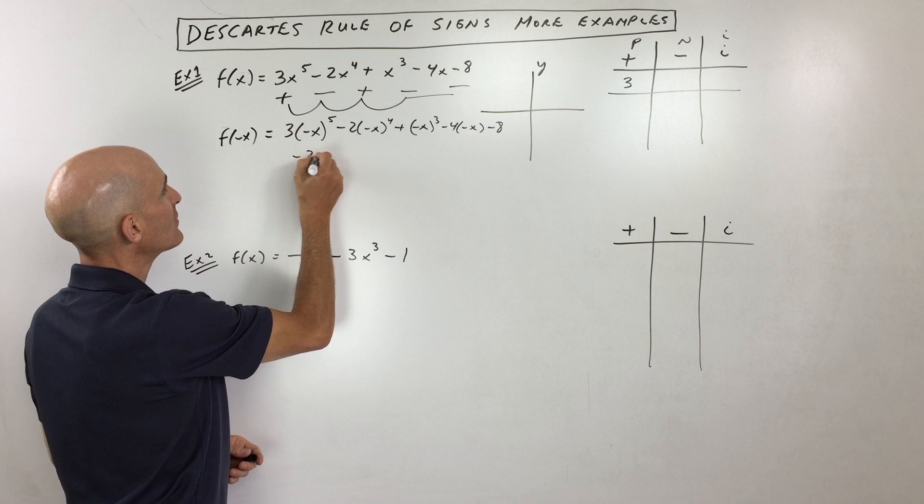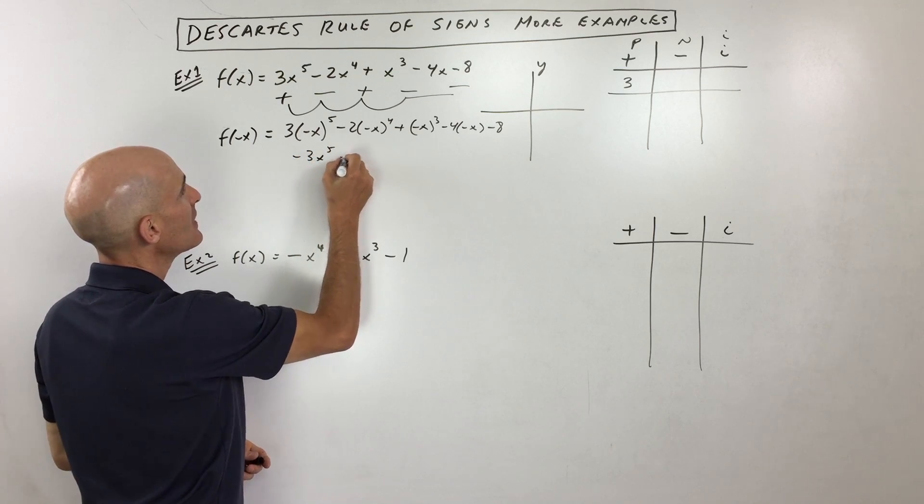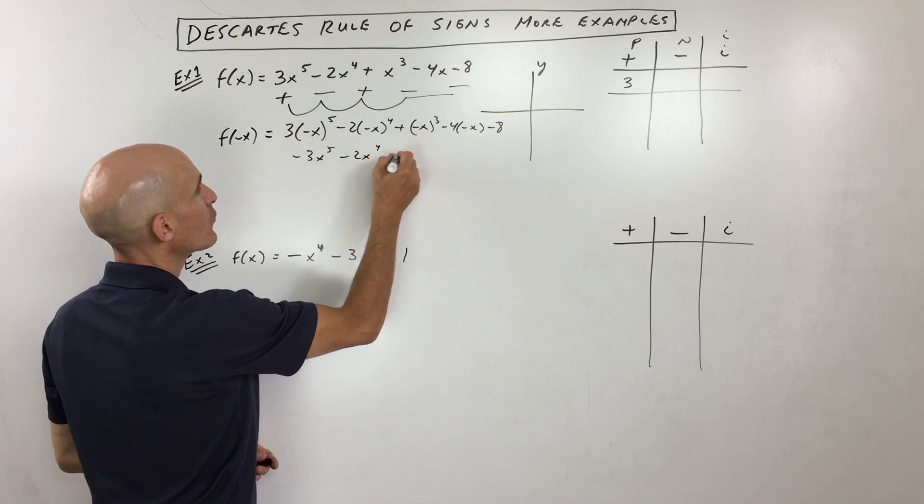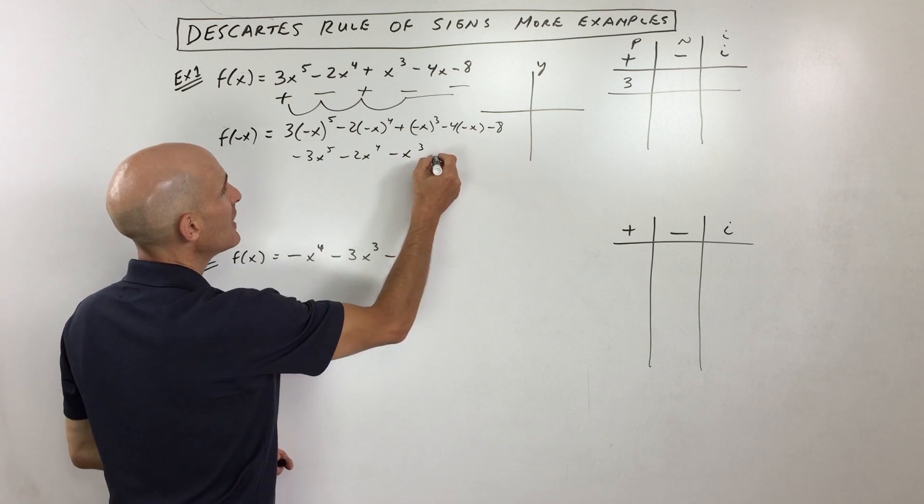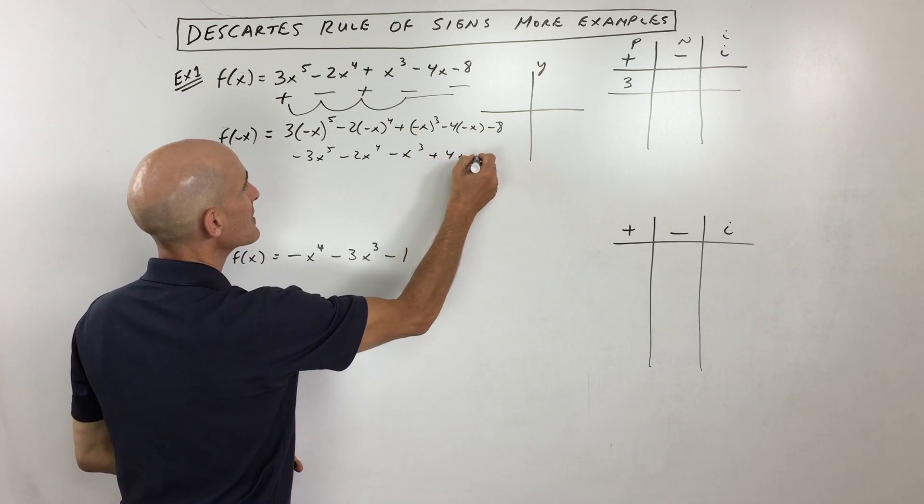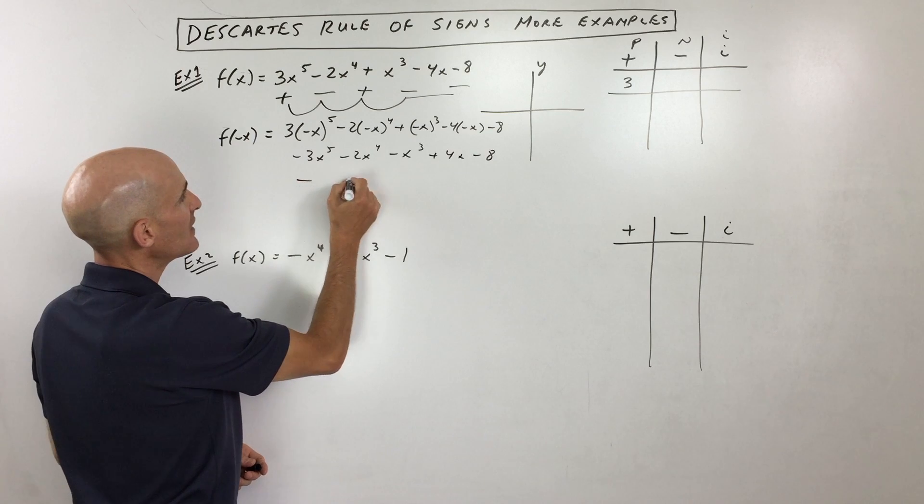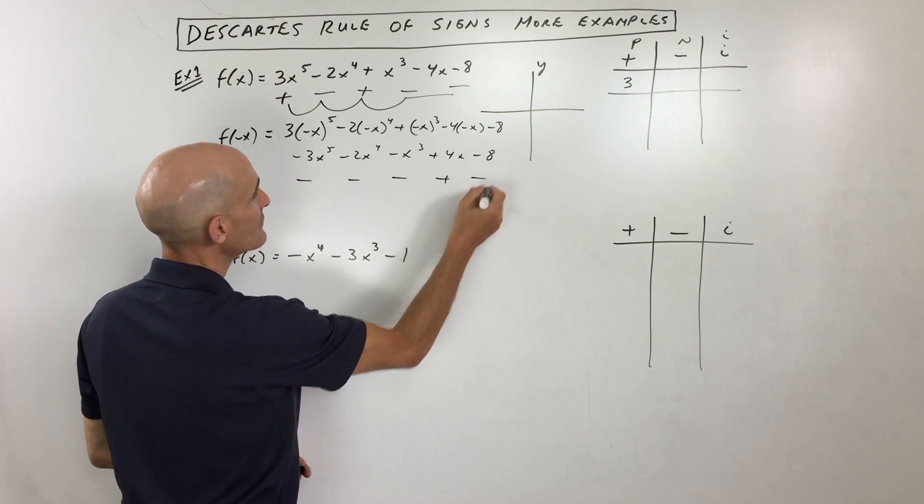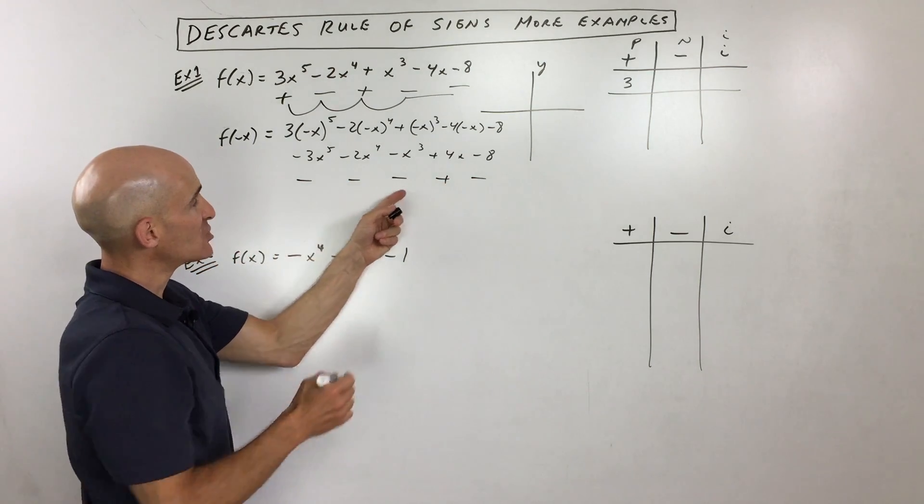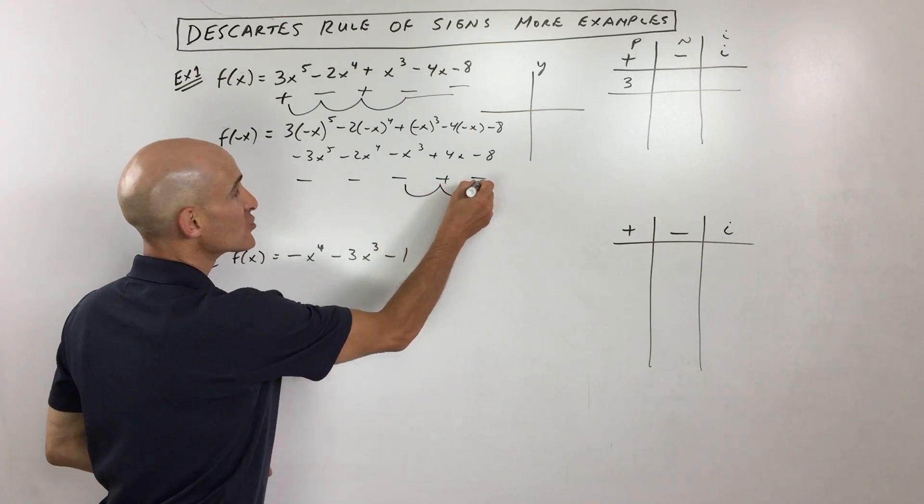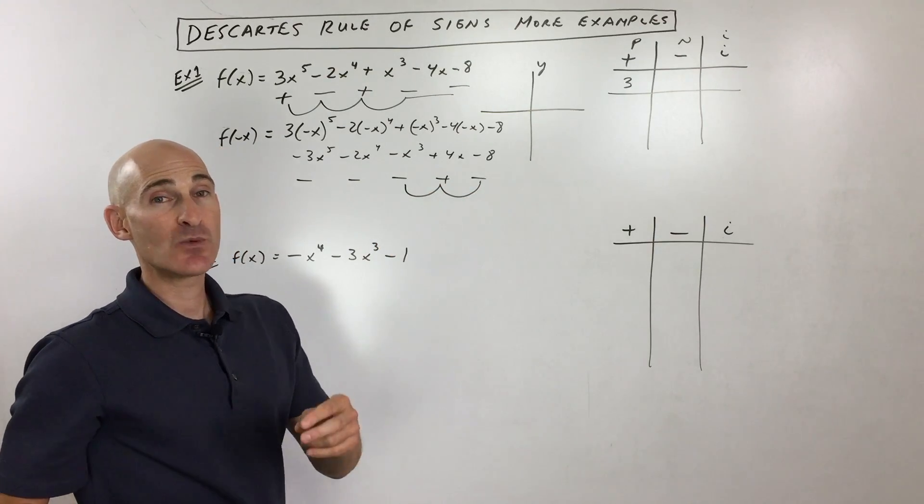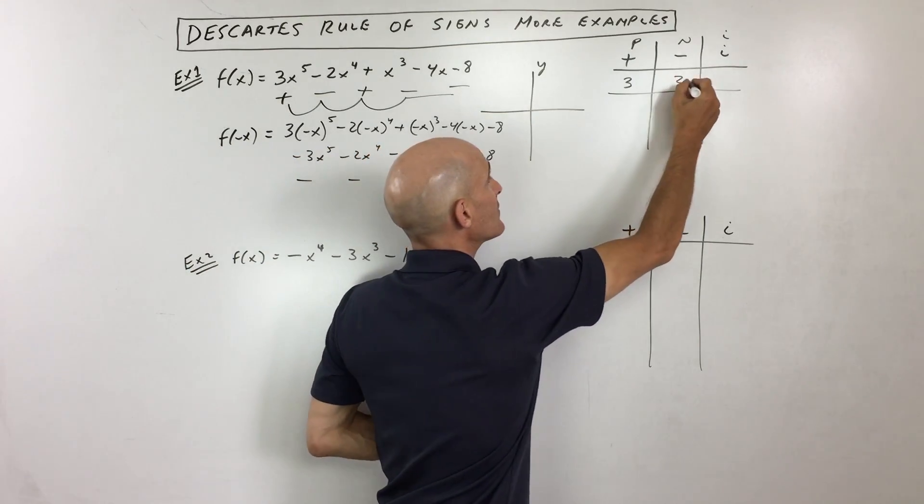If we go back and simplify, we get negative 3x to the fifth, negative 2x to the fourth, negative x cubed, positive 4x, and negative 8. So we've got a negative, negative, negative, positive, negative. So here you can see it's changing once, twice. So what that tells us is that we have a maximum of two negatives.